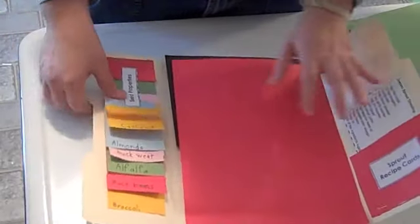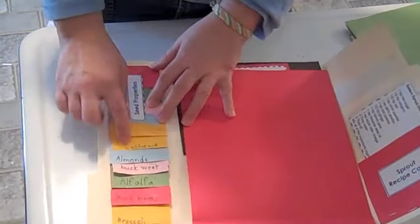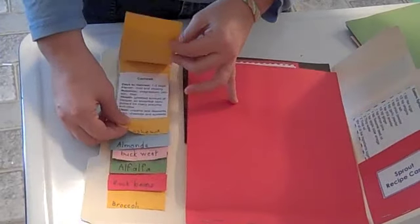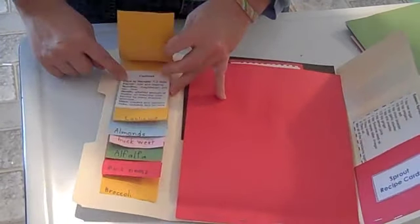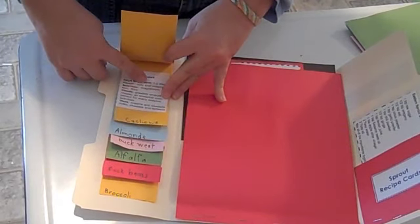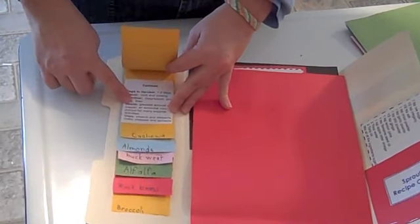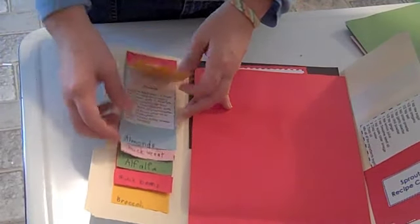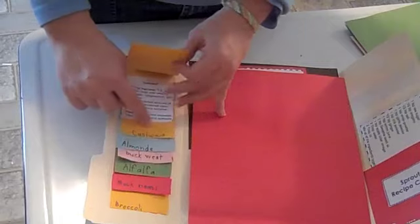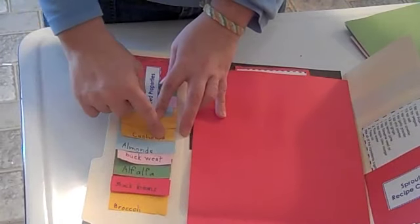So now we made seed properties and these are the different types of seeds you could have. You could have cashews and it tells you the days to harvest, the flavor, nutritional value, health, how it helps you and the uses. And I did that for cashews and then the kids wrote the names of them here,